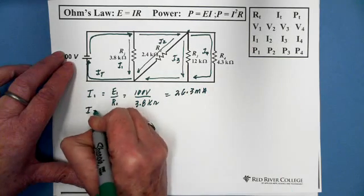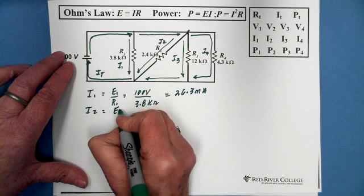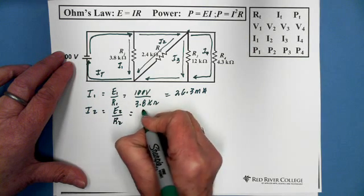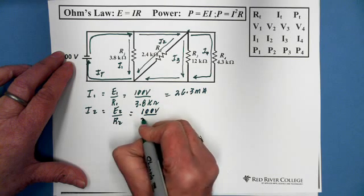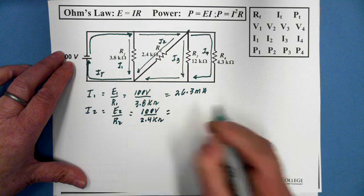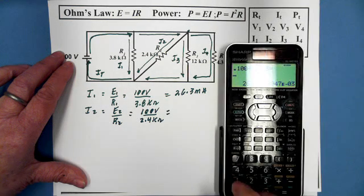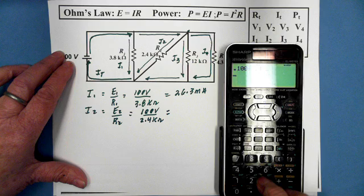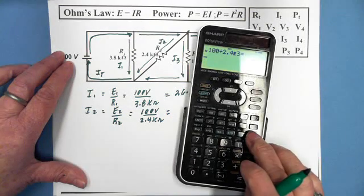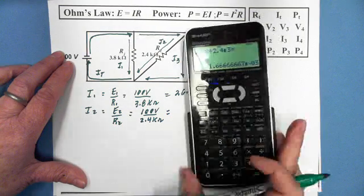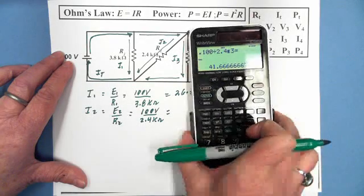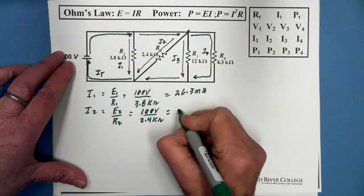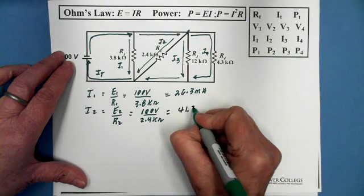I2. Voltage two over R2. 100 volts over 2.4 kilohms. This always comes up in fractions, which I kind of like, and kind of don't like. 41.7 milliamps.